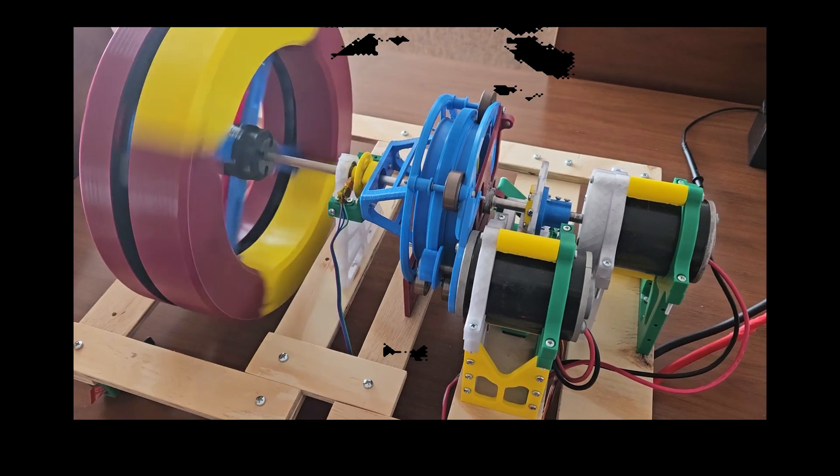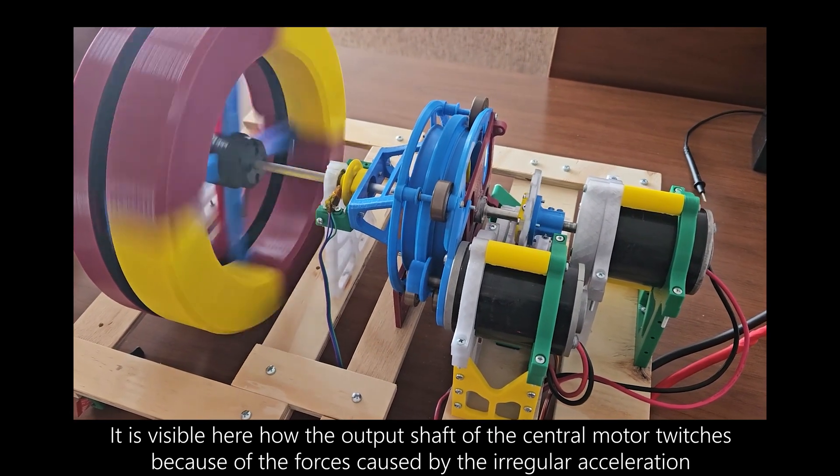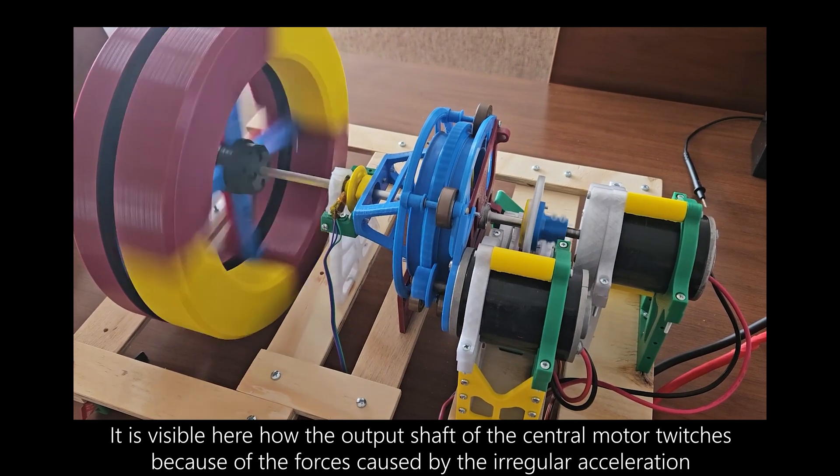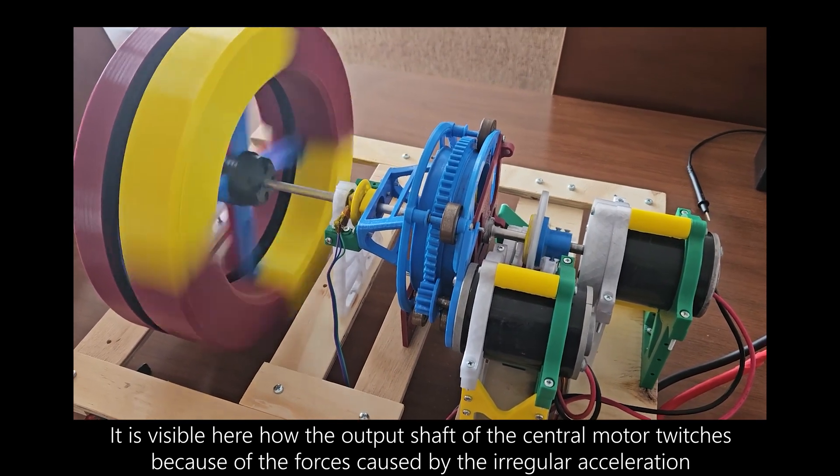What is more interesting about the planetary gearbox is that the input shafts are basically independent from one another. I mean, they are not independent as in they do not affect each other. In fact, they do a lot. It's just that both of them can rotate at different speeds.